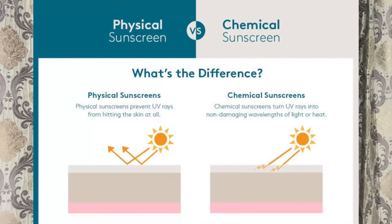Sunscreens bhi do tarike ki aati hain — physical and chemical sunscreens. In dono mein difference kya hota hai? Physical sunscreens mein aise ingredients hoti hain jo basically agar koi UV light aa raha hai unko reflect kar deti hain. But chemical sunscreens ki jo layer hum ne lagayi hai woh UV light ko absorb kar leti hai. Basically yeh difference hota hai dono sunscreens mein.